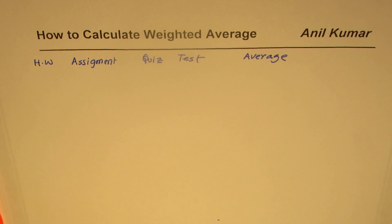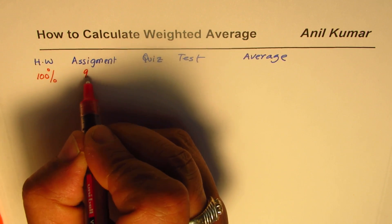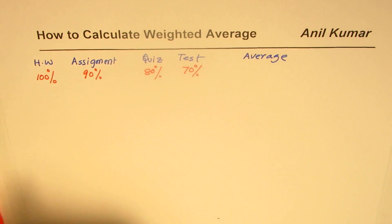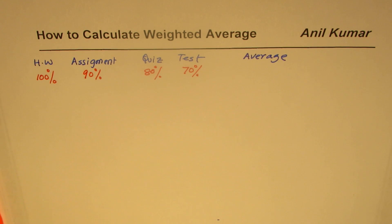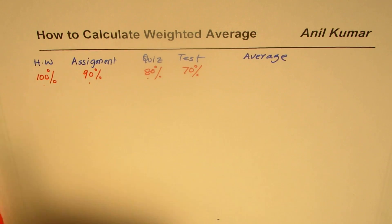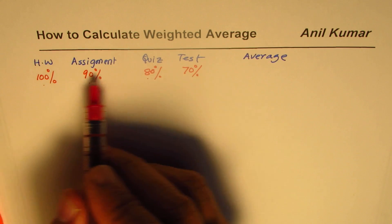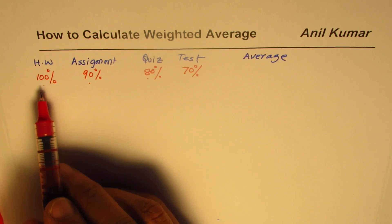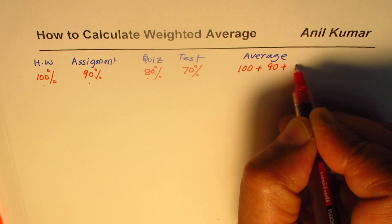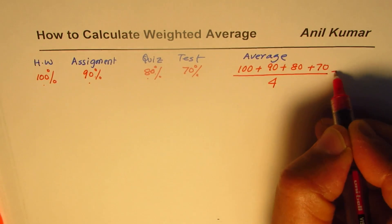Let's say in homework a person gets 100 percent marks, in assignment 90 percent, quiz 80 percent, and test 70 percent. These are the percent marks a student gets in these four things. Each is out of 100, so we can add them all and divide by four — since there are four things.